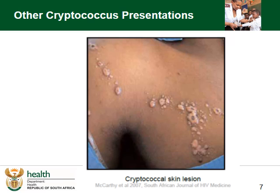Another common presentation is cryptococcus of the skin, and this can present in many different ways. Most commonly it is either a papule, a pustule, a nodule, or even an ulcer. It can be mistaken for a whole range of different skin conditions, including molluscum contagiosum or disseminated histoplasmosis. Quite often having a CRAG or even a biopsy can help you identify the underlying lesion.